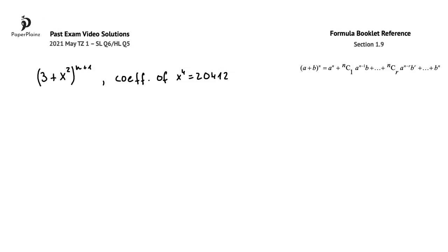In this question, we are asked to consider the expansion of (3 plus x squared) to the power of n plus 1. We are told that the coefficient of the x to the power of 4 term is 20,412 and we are asked to find the value of n.